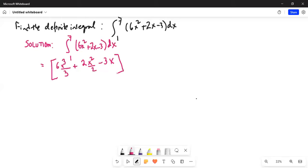And the limits are from 1 to 7. So, this will simplify to 3 goes into 6 two times, 2x cubed, 2 goes into 2 one times, just x square minus 3x limits are from 1 to 7.